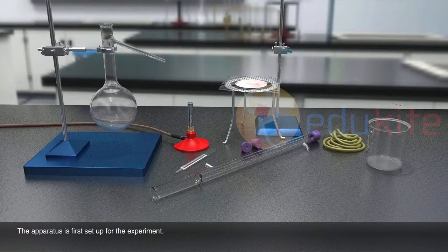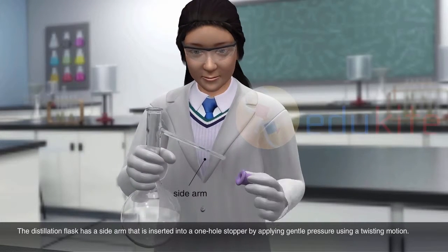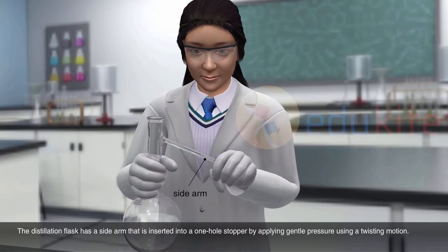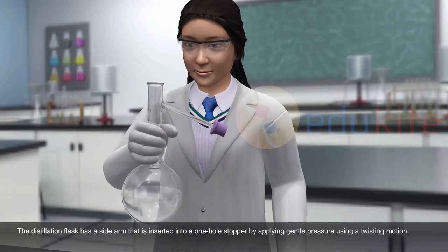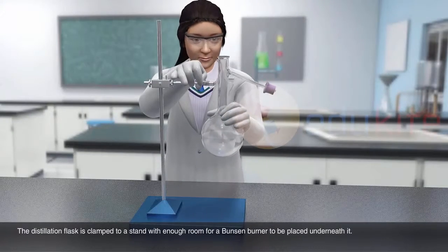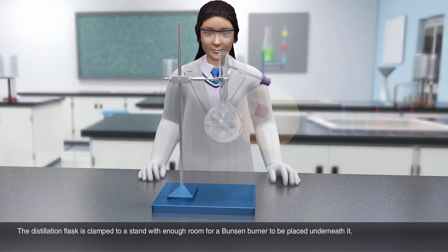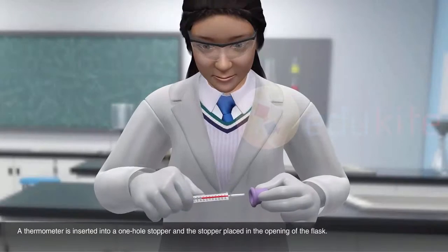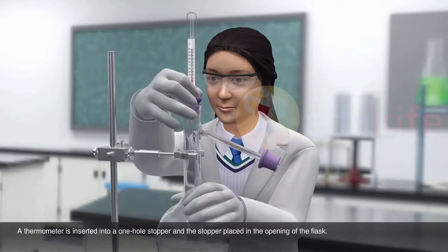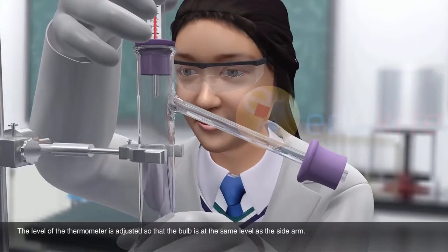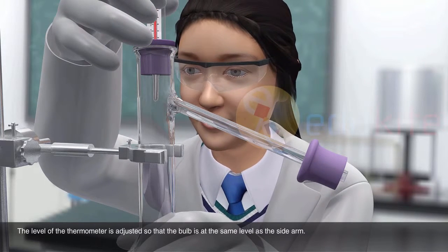The apparatus is first set up for the experiment. The distillation flask has a side arm that is inserted into a one-hole stopper by applying gentle pressure using a twisting motion. The distillation flask is clamped to a stand with enough room for a Bunsen burner to be placed underneath it. A thermometer is inserted into a one-hole stopper and the stopper placed in the opening of the flask. The level of the thermometer is adjusted so that the bulb is at the same level as the side arm.